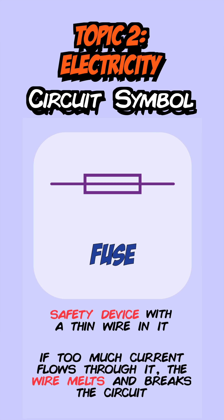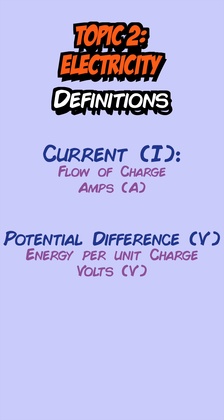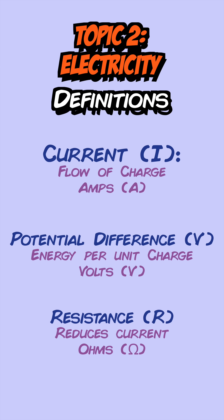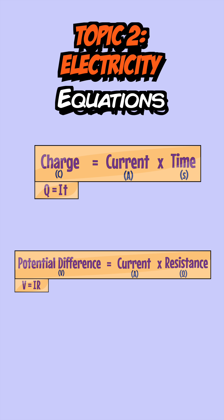Current is defined as the flow of electrical charge and is measured in amps. Potential difference is the energy per unit charge, measured in volts — it's basically the force that pushes the current around the circuit. Resistance is a property that reduces the flow of current and is measured in ohms. There are two equations related to these definitions: Q = IT and V = IR.